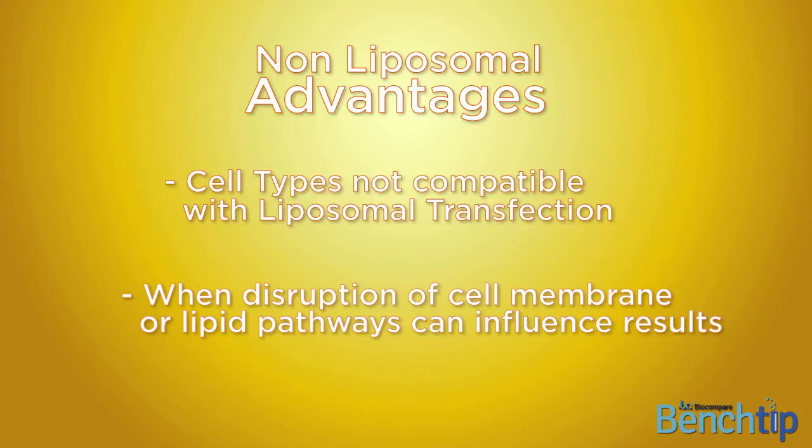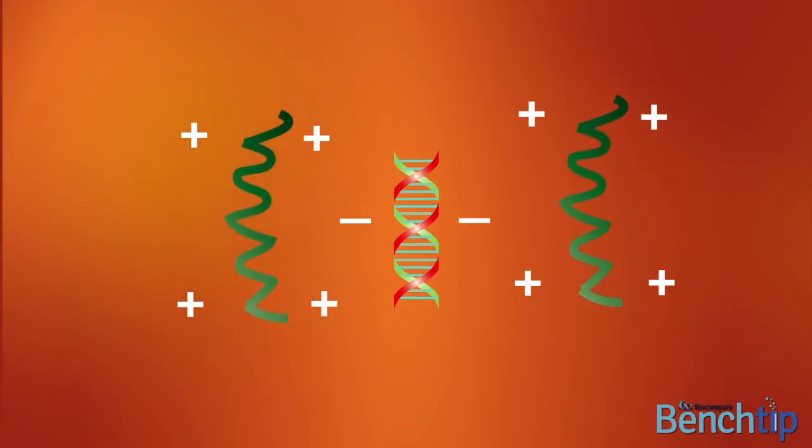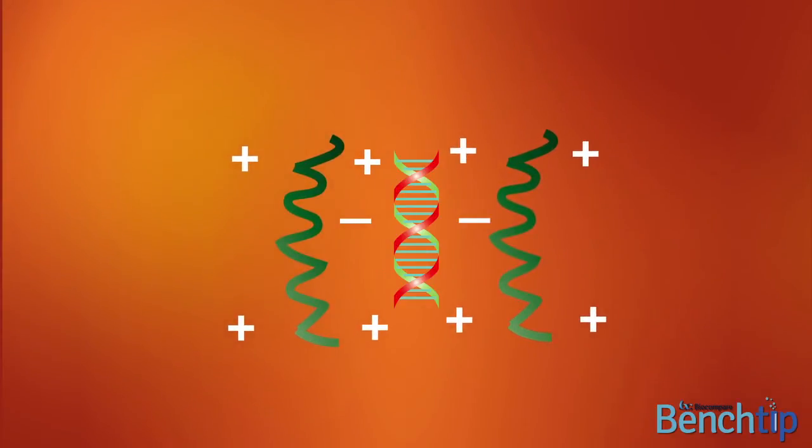So how do these transfection polymers work? As opposed to liposomes, polymers are very effective nucleic acid condensing agents. These polymers provide positive charge side groups that can interact efficiently with the negative backbone of DNA and siRNA and form tight complexes that have a net surface positive charge.